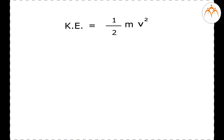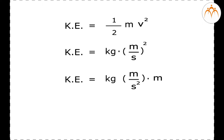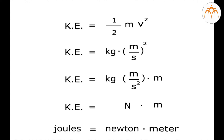Let us check the units. mv² is kilograms times meters per second squared. Taking one of the meters outside and using Newton's second law reminds us that kilogram·meters per second squared is the unit of force — newtons — and newtons times meters equals joules. This equation reveals that kinetic energy is directly proportional to the square of speed. A two-fold increase in speed increases kinetic energy by a factor of 4, and a three-fold increase in speed increases kinetic energy by a factor of 9.